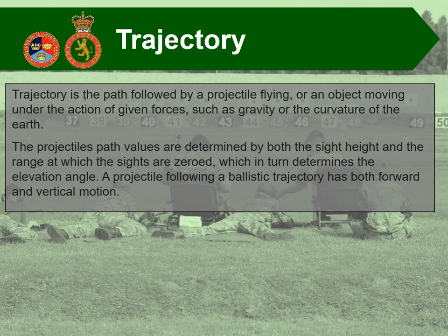A projectile following a ballistic trajectory has both forward and vertical motion. So over the distance between the firer and the target, the bullet doesn't fly straight in a flat line. Due to the pull of gravity, the barrel of the rifle needs angling up slightly to counteract gravity. As it's fired, it will fire in an upward arc and gravity will pull it down into the target.